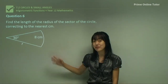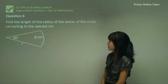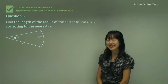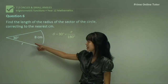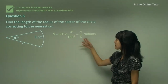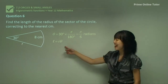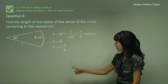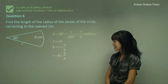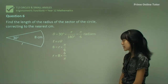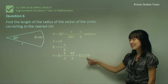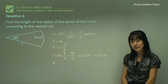Question 6 — find the length of the radius of the sector, correct to the nearest centimetre. Note: in an exam they probably wouldn't have the diagram there for you, so familiarise yourself with drawing diagrams. The angle is 30 degrees, so we convert to radians: we get π/6 radians. Using L equals R theta, we know L and the angle. Substituting gives R equals 8 times 6 over π, which is 48/π. Correct to the nearest centimetre, that's 15 centimetres.